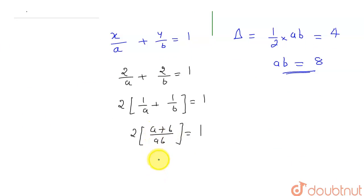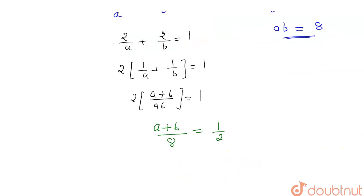So, this is giving me a plus b upon the value of ab we have found to be 8 is equal to—let me divide both sides by 2—so here I am getting 1 by 2. So, from here, this value of a plus b, which is the sum of the intercepts, is equal to 8 divided by 2, which will be equal to 4.